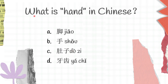And finally the last question for today: what is hand in Chinese? A, jiǎo; B, shǒu; C, duzi; D, yáchǐ. Jiǎo is foot, shǒu is hand, duzi is belly, yáchǐ is teeth. And B is the correct answer for this question, shǒu.